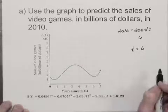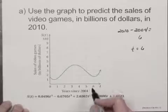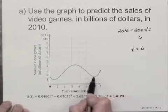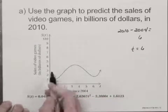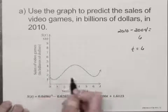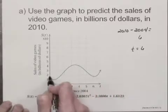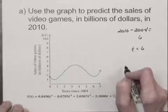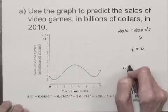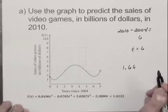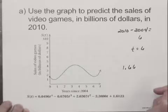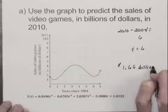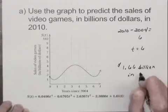So we really want to find S of six, and we can use the graph to do this by starting at the point six on the horizontal axis. We go up to the graph, and then we go across to the vertical axis to the point that corresponds to six on that axis, and it looks like it's right about here. Let's just estimate that that's at about 1.66 on the vertical axis. So this means that we would estimate that the sales of video games would be about $1.66 billion in the year 2010.